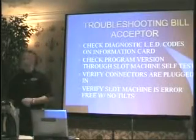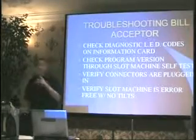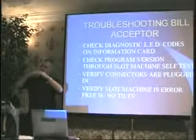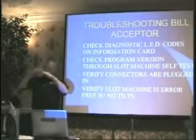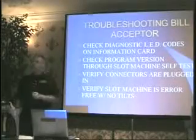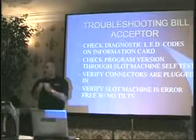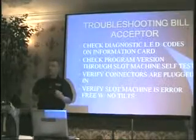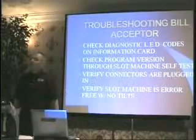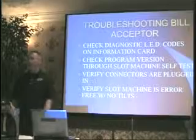You also want to make sure that everything is connected properly — all your edge connectors are making good contact. On the interface cards on the back where the edge connector sits, they're basically like little spring connectors. Those can get bent out of shape. If you can realign it, do so; if not, you'll have to replace it. You also want to verify that the machine doesn't have any outstanding tilts on it.